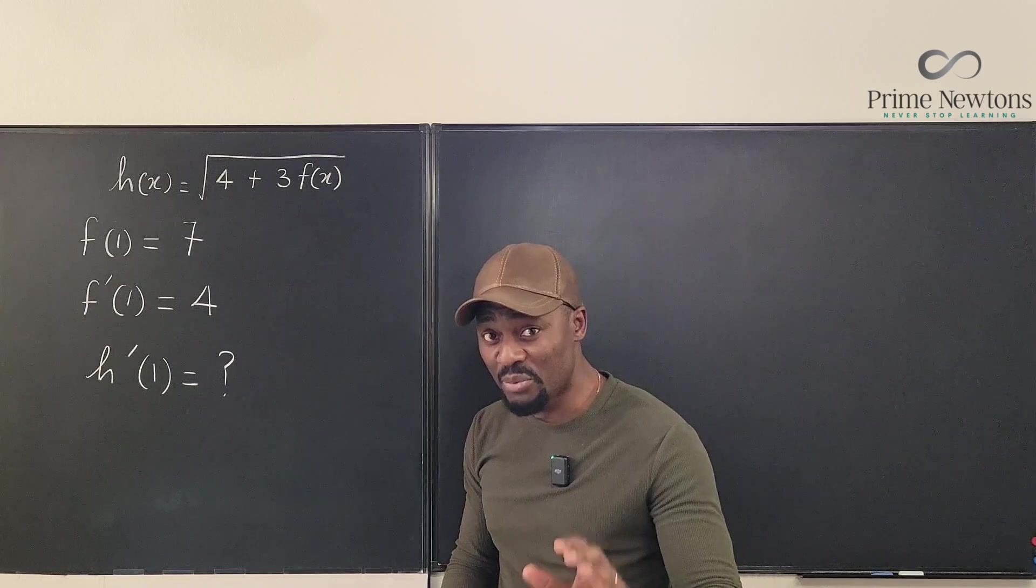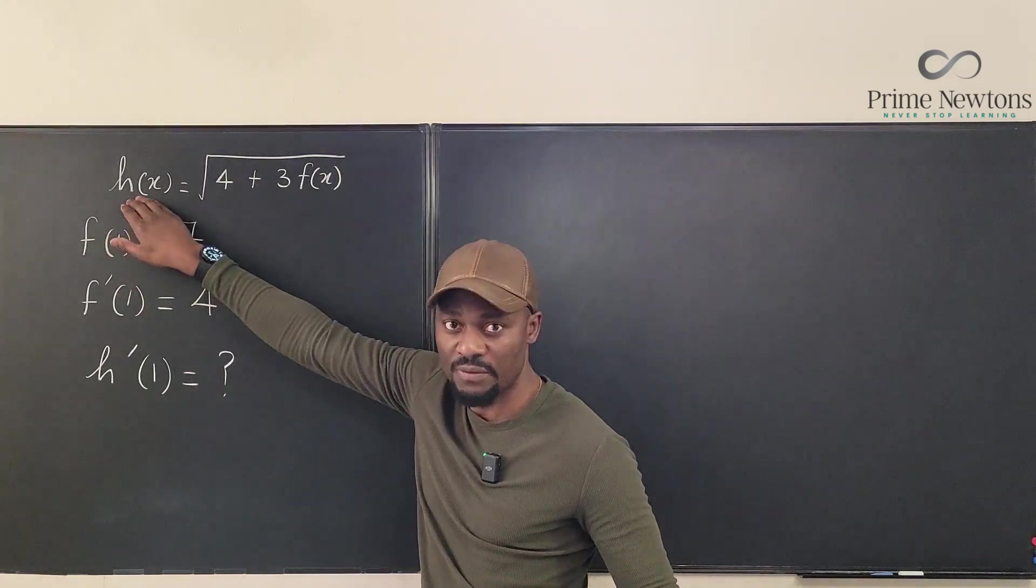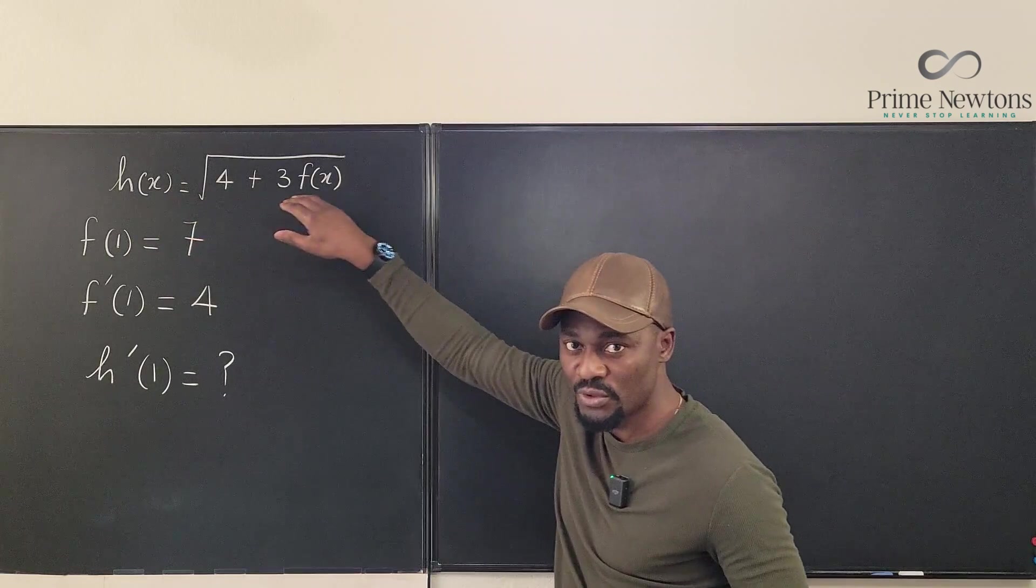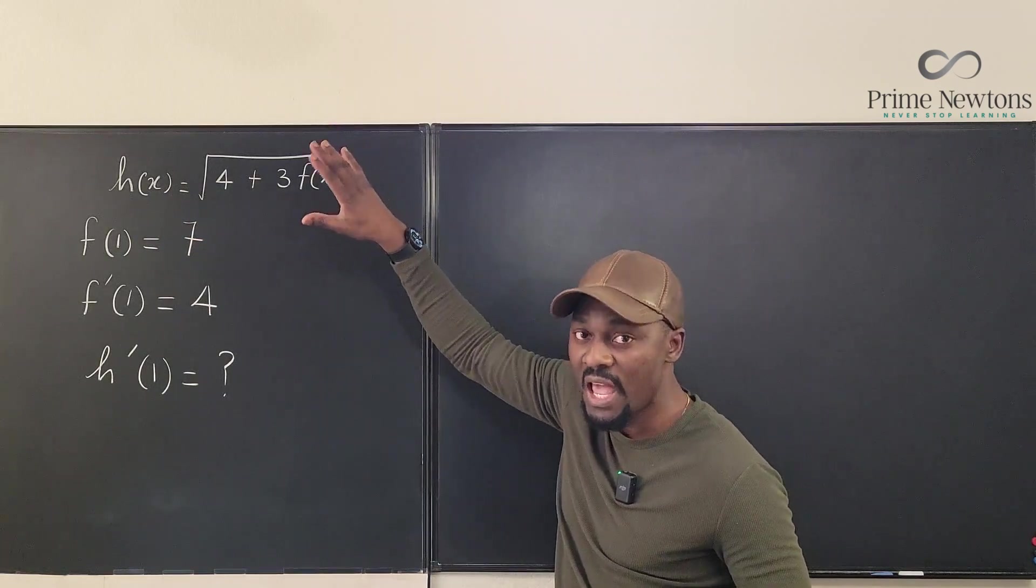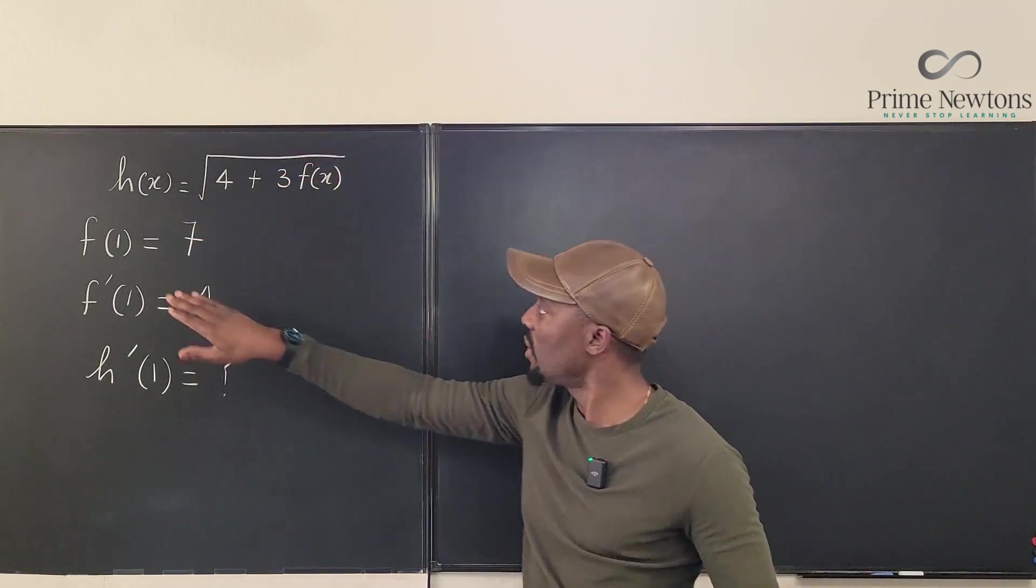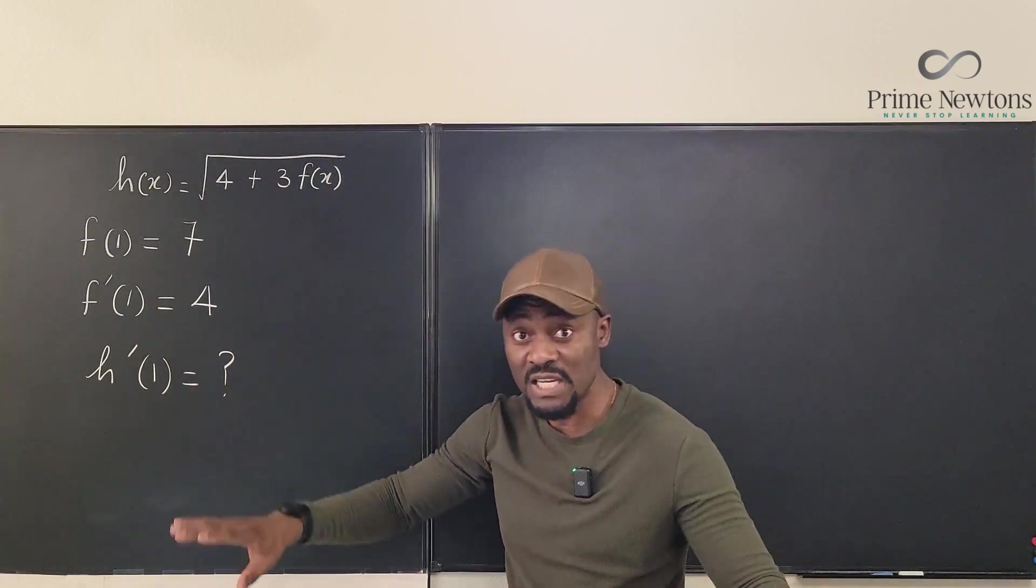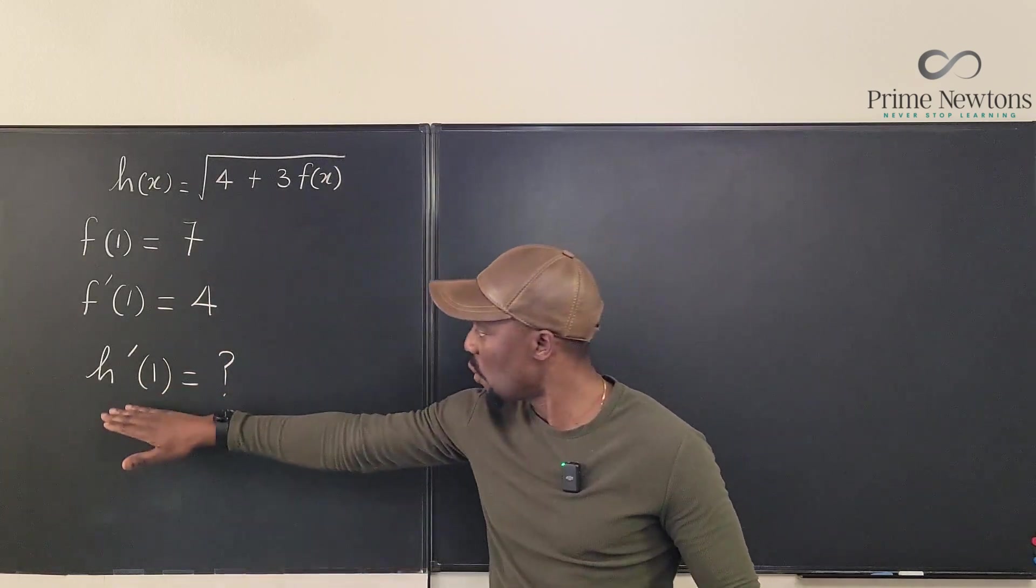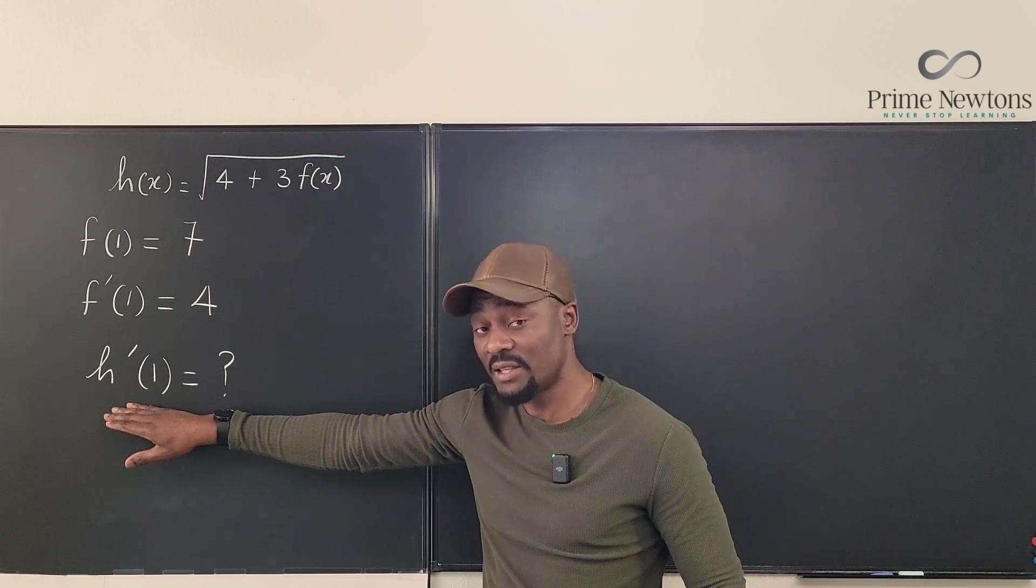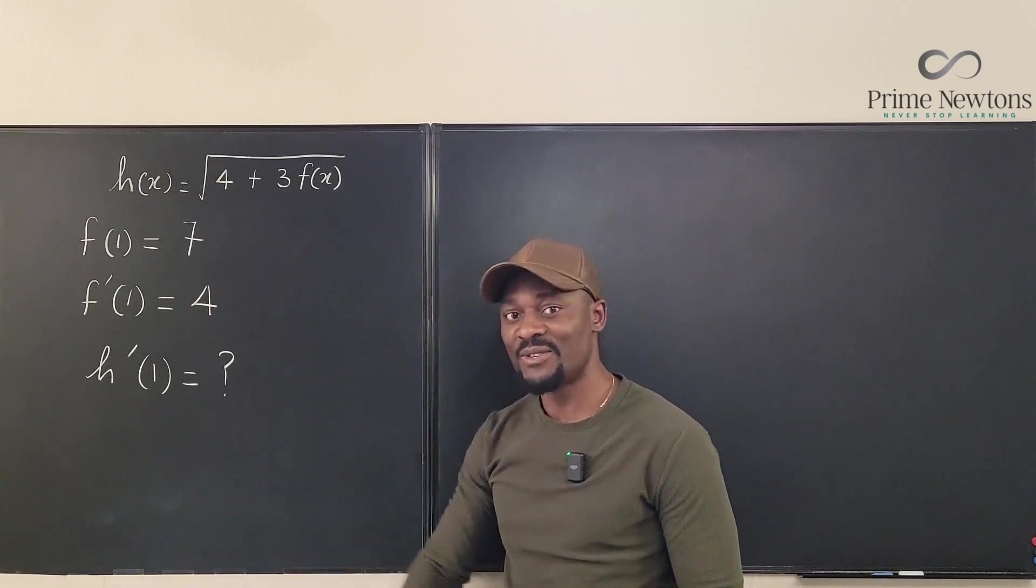So remember the process here is you differentiate this function first following the rules that you know about the chain rule, and after you're done you just plug in the values because what you need is already provided in order to evaluate the function at x equals 1. Let's get into it.